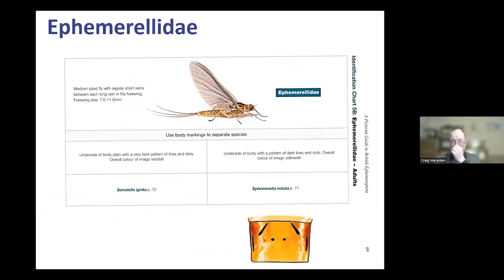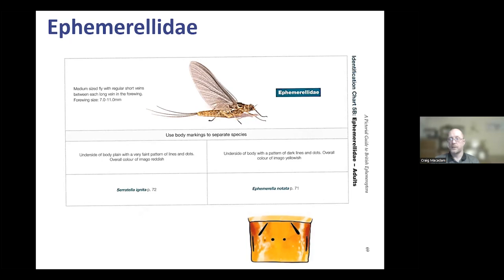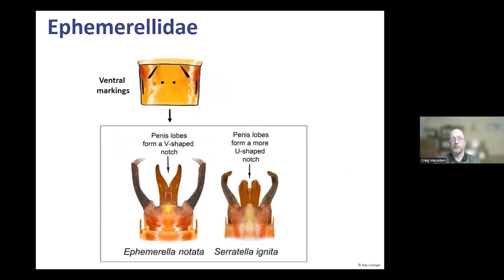The Ephemerellidae — there are only two species in the UK, relatively easy to separate. Ephemerella notata has distinctive markings on the underside — dots and stripes — whereas Serratella ignita doesn't, although in some rivers it has a much darker body colour. In some chalk stream rivers you can sometimes see a pattern through the background colour, but it's never as distinctive. For the male genitalia, if you've got Ephemerella with those markings you should have long, pointed penis lobes.